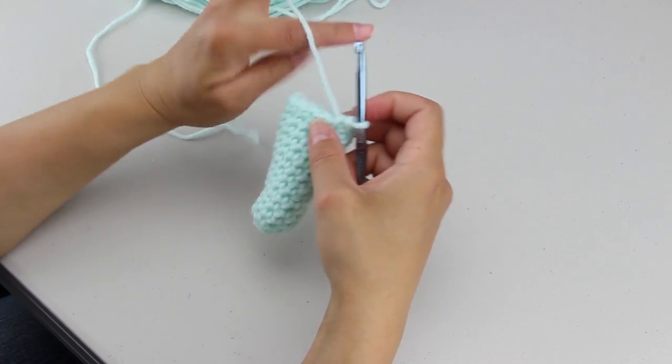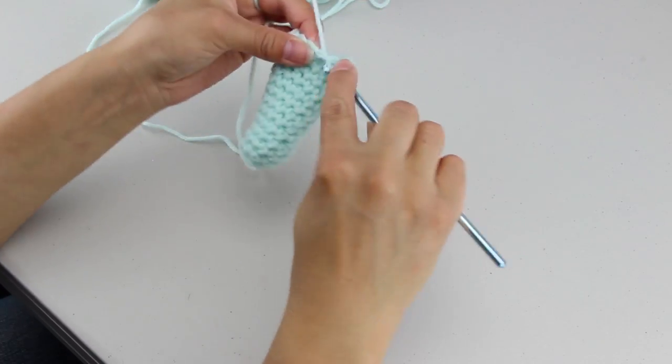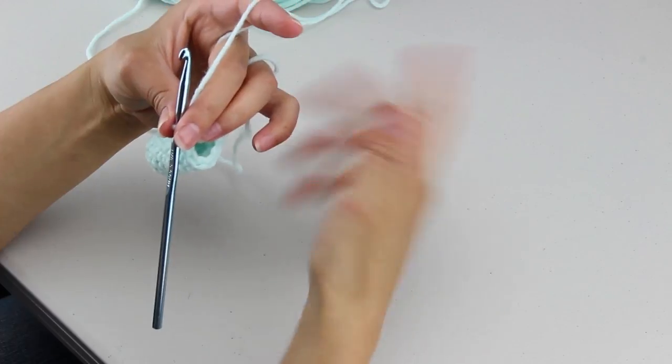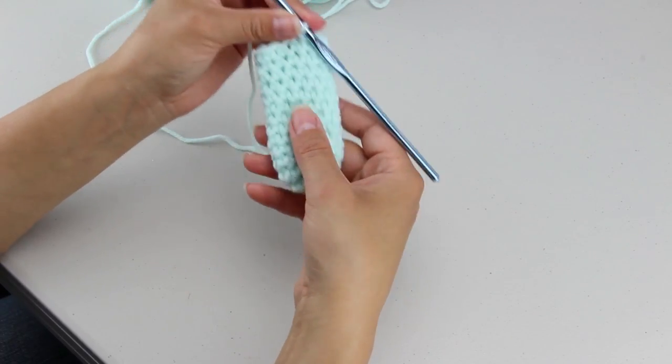So all we need to do now is slip stitch into our next stitch. And then we're going to cut it off, weave in our ends and then you're all done and you have your freezer pop cozy.